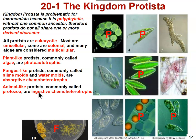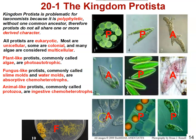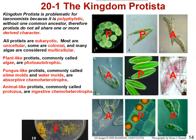The ones that are left in the images are the animal-like protists — the protozoa. The protozoa get around in a variety of ways, and that's how they're classified: by their mode of locomotion.